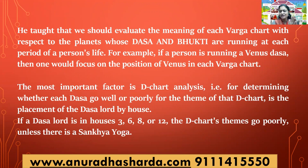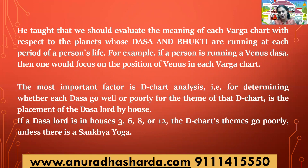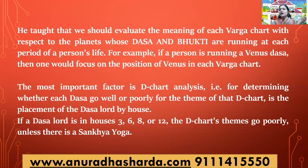Sankhya Yoga has been discussed in detail in many videos relating to Ayurji's principles. In brief, there is a pairing of houses system: 1-7, 2-12, 3-11, 4-10, 5-9, and 6-8. When planets are in these paired houses, they are capable of giving better results. Whether malefic or benefic, they will decide whether the results will be supporting, repressive, or opposing.